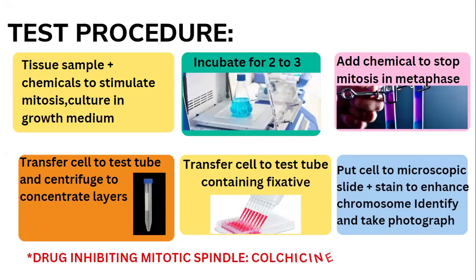To carry out this test, take a tissue or cell sample and add chemicals that stimulate mitosis, then culture it in growth medium. Incubate for two to three hours. Then add chemicals to stop mitosis at metaphase — for example, colchicine, an anti-gout drug, can be added to inhibit mitosis.